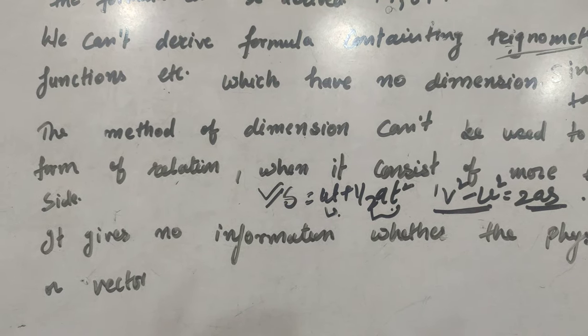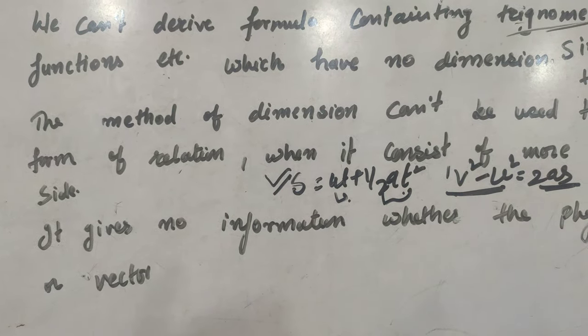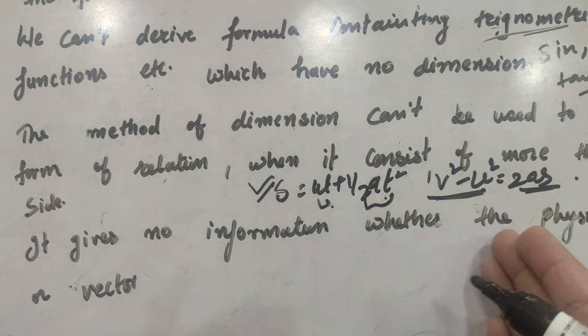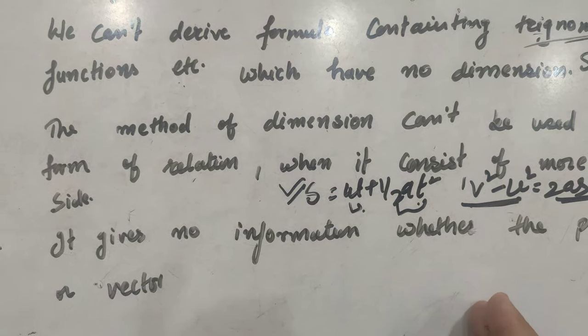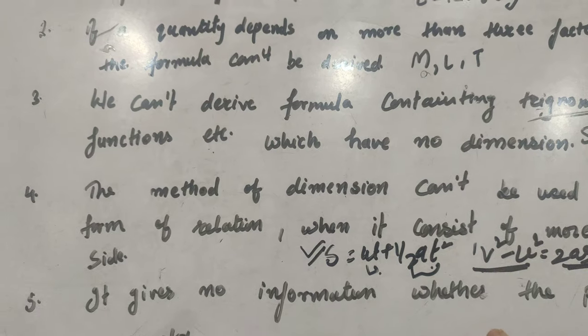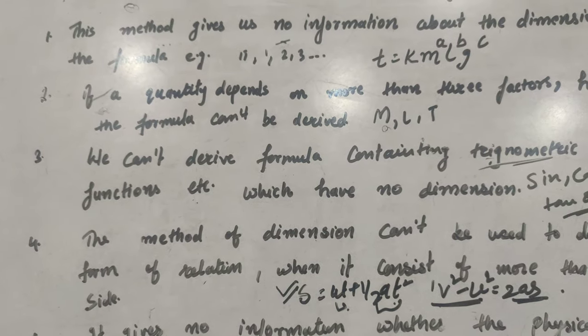we can convert from one system to another but we are not able to find out whether this is a scalar quantity or vector quantity. So, these are the basic limitations of the dimension analysis.